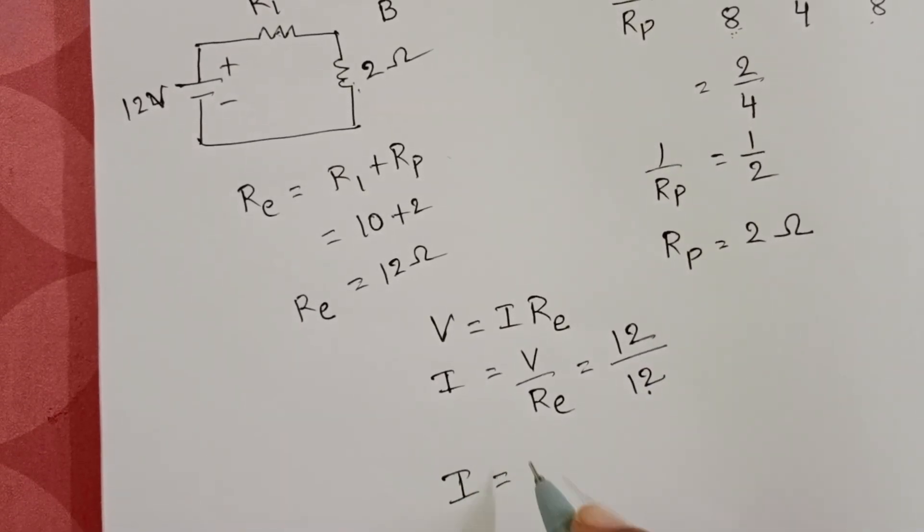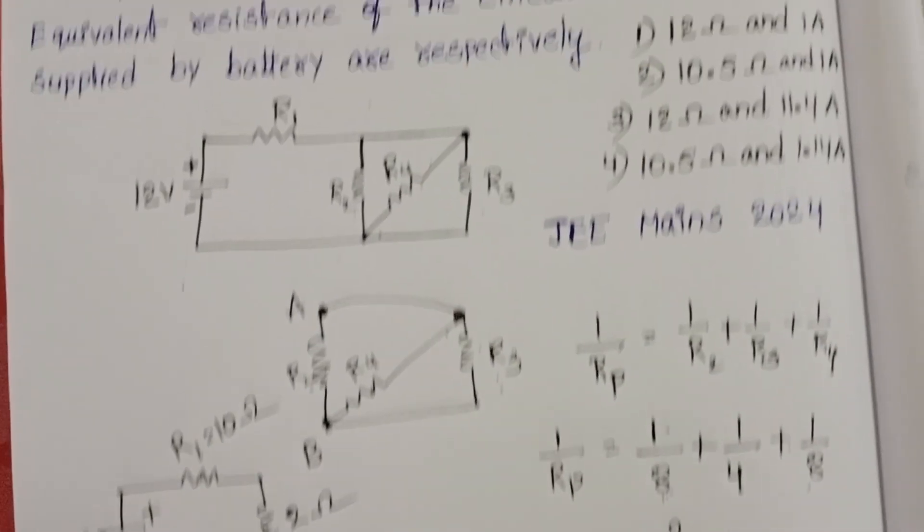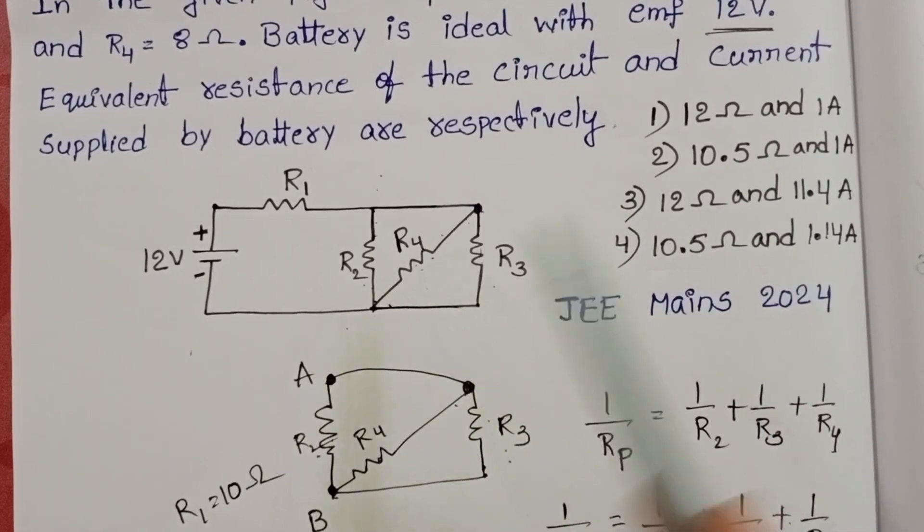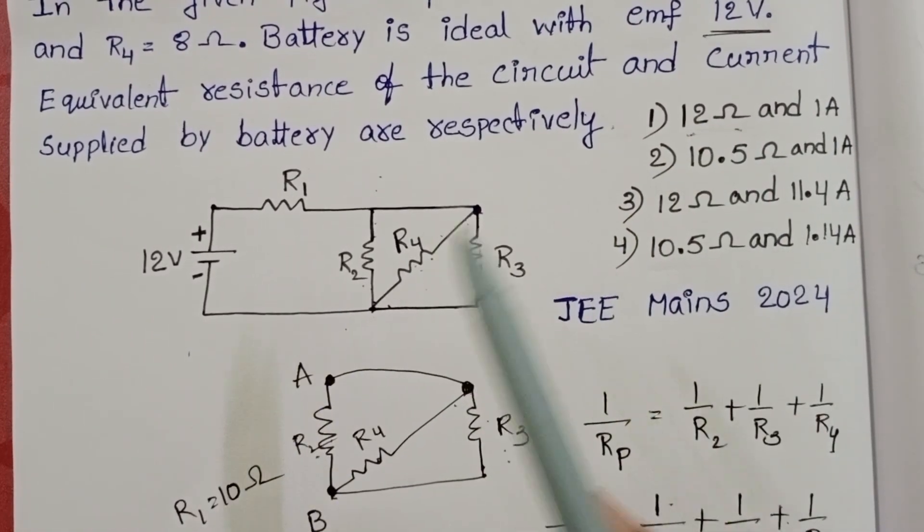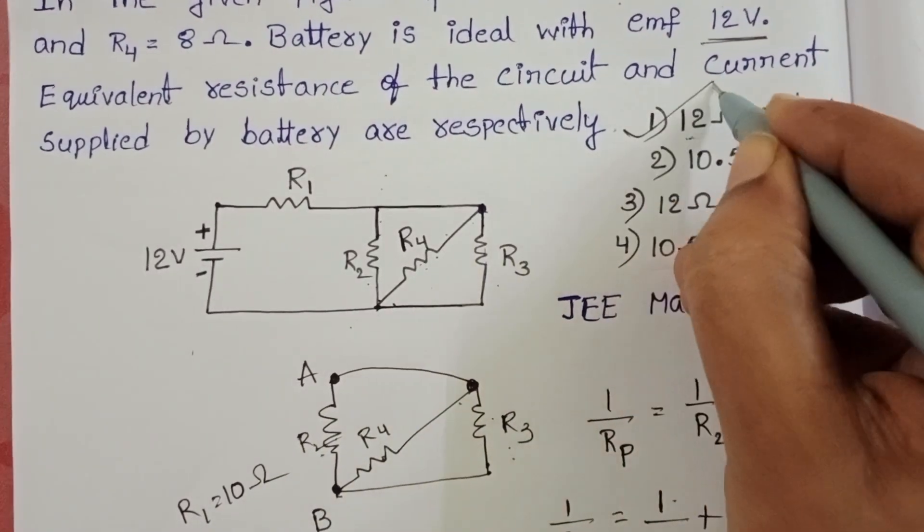The current passing through the circuit is 1 ampere. Check the given options: equivalent resistance is 12 ohm and current is 1 ampere. So the first option is correct.